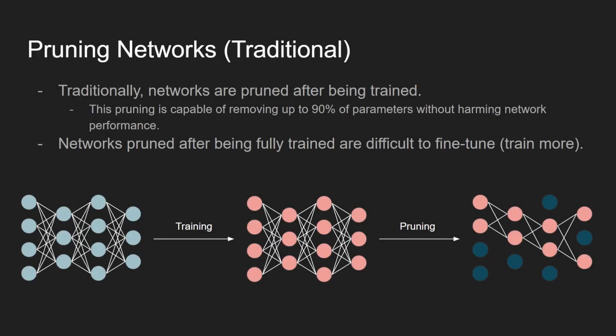Pruning in neural networks is a technique that has been used for quite some time. The idea is that while all parameters within a neural network work together to calculate its output, many parameters can be removed without heavily damaging the network's accuracy. Thus, pruning a trained network, one can achieve a model which is up to 90% smaller with negligible effect on the network's ability to perform, saving precious memory.